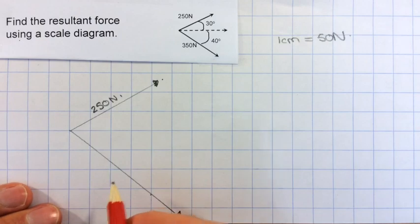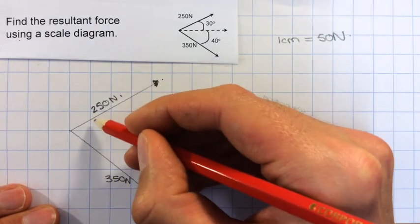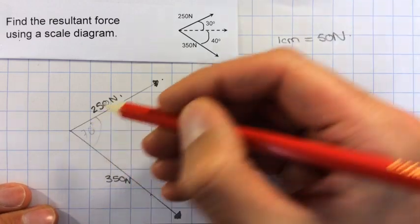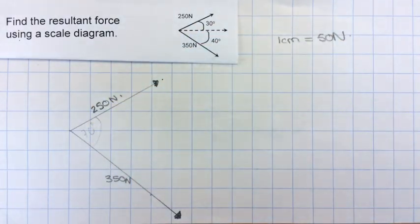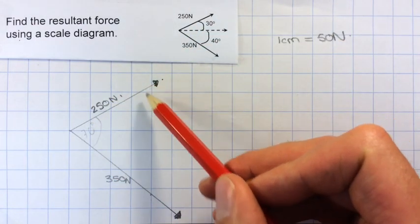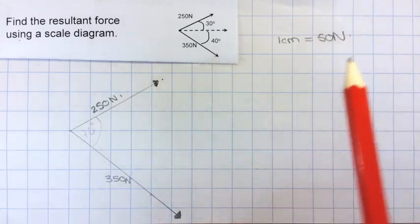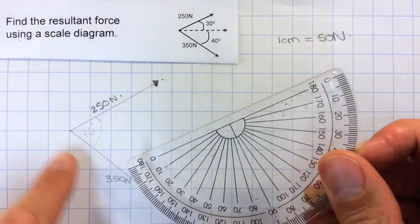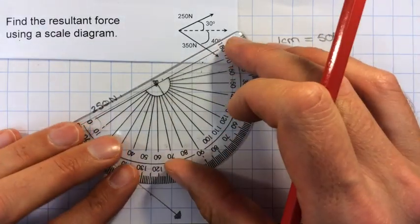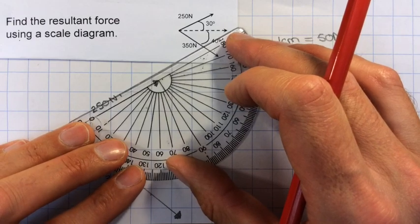Label that as 350 N. So this angle here is 70 degrees, and so I know that my other angle here in the parallelogram should be 110 because 70 plus 110 would make up 180.